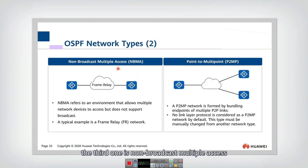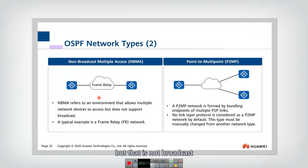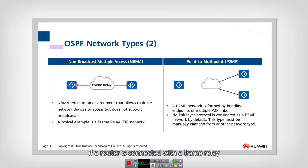The third one is non-broadcast multiple access. Here you are connected with a multiple access network, but it is not broadcast. A typical network is frame relay. If a router is connected with a frame relay, then that is NBMA.